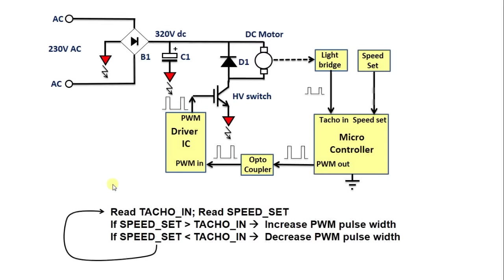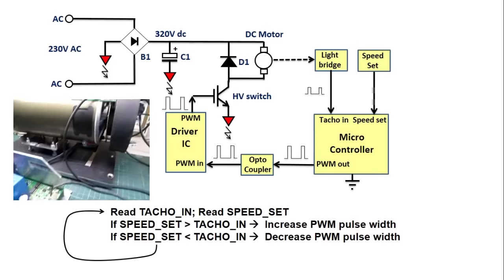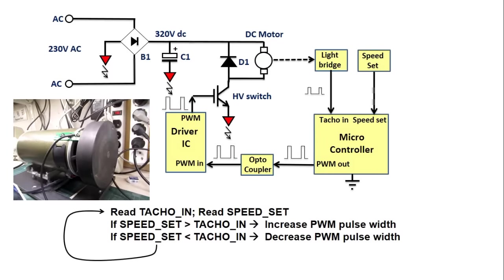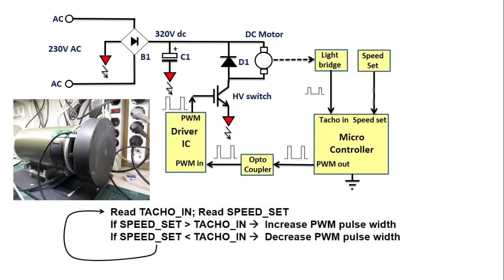The control loop is not fast, as it takes time to measure the tacho input and I'm using 10-bit PWM resolution. But this is not critical, because the motor has a big flywheel that will handle most of the load transients.